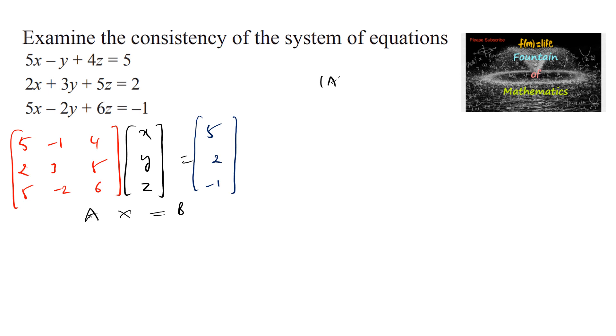We know that if |A| ≠ 0, the given system has unique solution and is consistent. If |A| = 0, we need to find adjoint of A into b. If it equals 0, we have infinite solutions and consistency. If it's not equal to 0, we can say inconsistent, that is no solution.